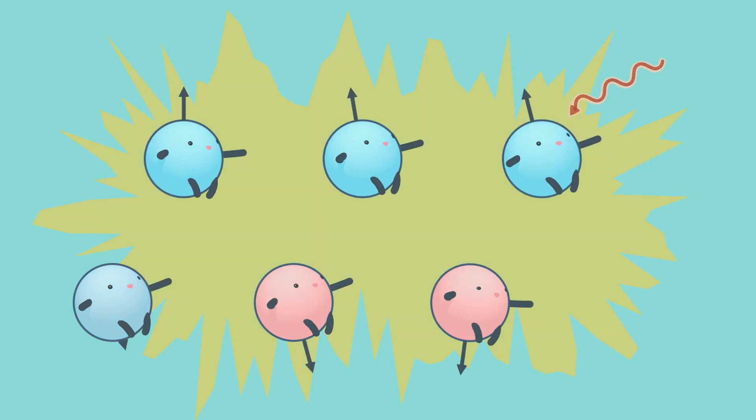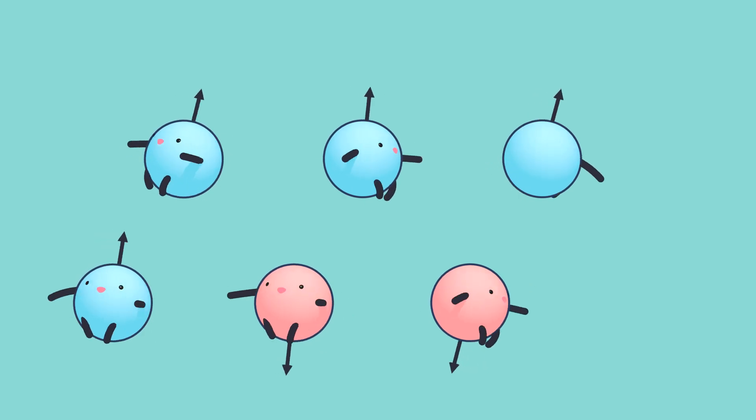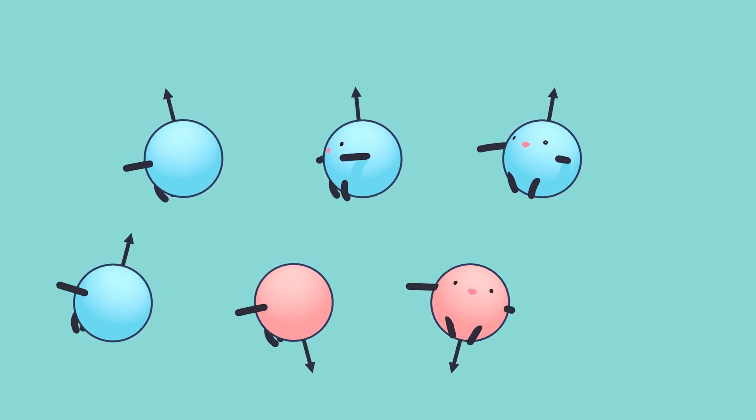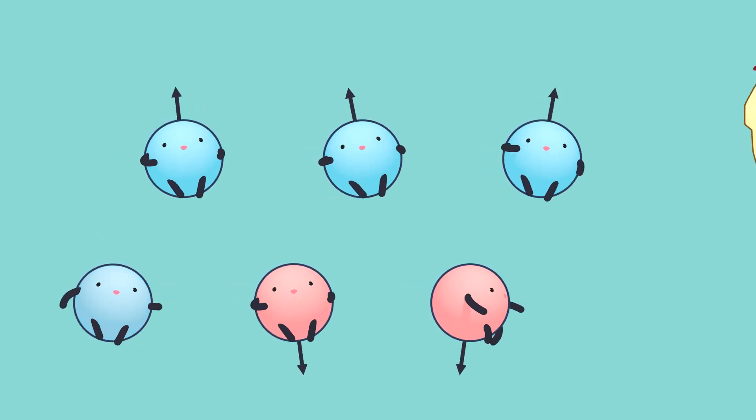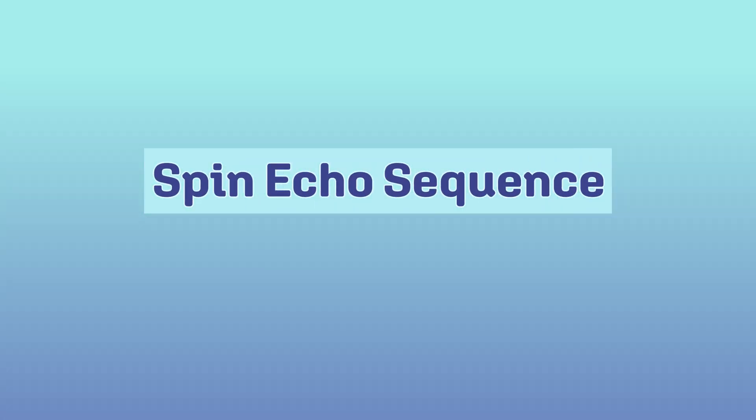Much like my children, the protons will recover or return to their original state of orientation with the magnetic field and asynchronous precession. Now that we've gone over what can happen when we administer an RF pulse, let's talk specifically about what happens during a typical spin-echo sequence.